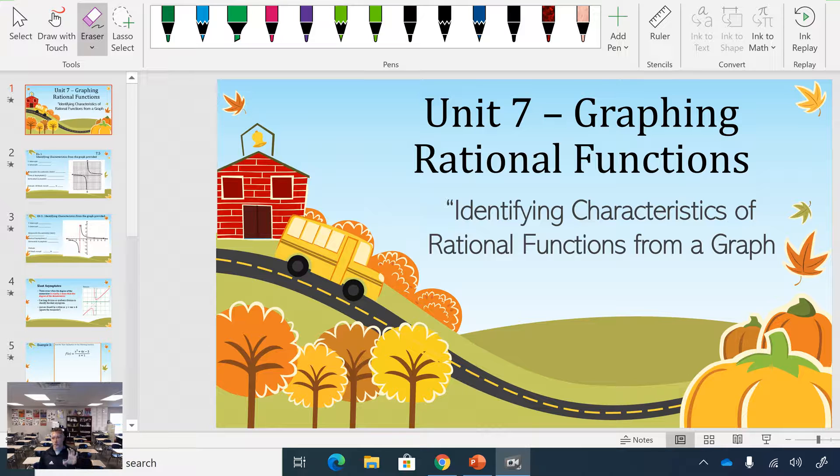But the first two examples will be things that you've seen. Then we'll get into slant asymptotes and end behavior and then identifying at the very end. So this will be the part 1 video where we have two that are somewhat review and then the slant asymptote. So let's jump right in.